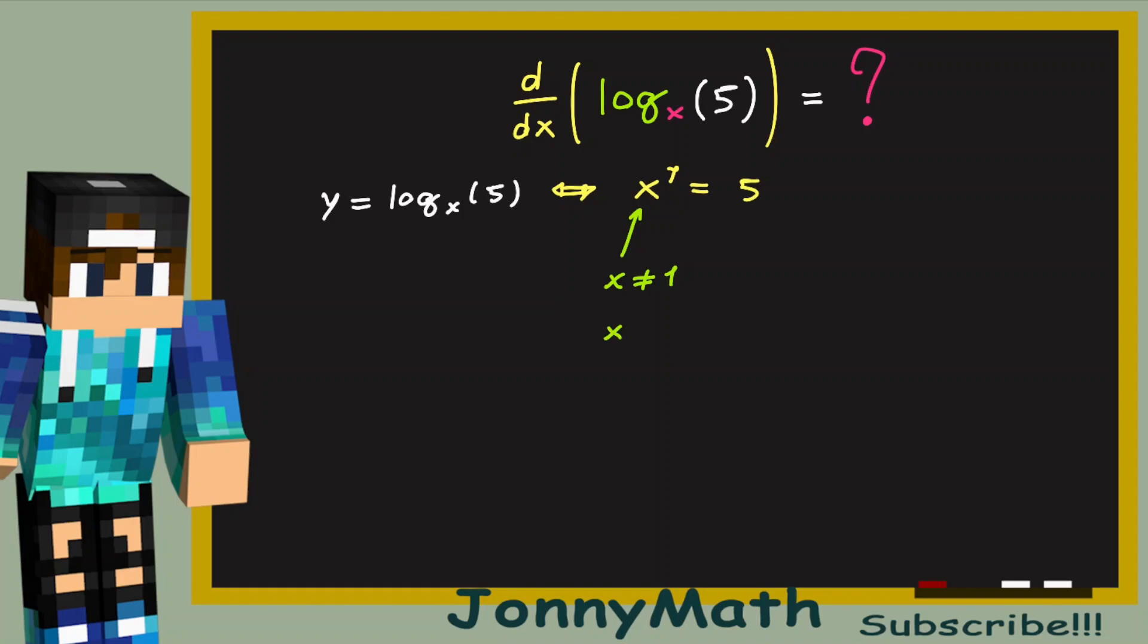And x has to be greater than 0, because if x were less than 0, this wouldn't have been an exponential function, it would have been discontinuous, and it is not the exponential function we're used to. So these are the two conditions for x.